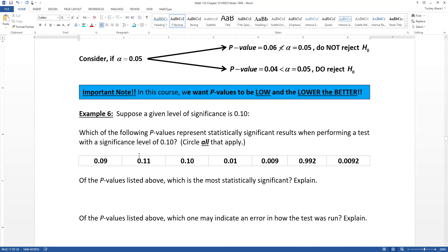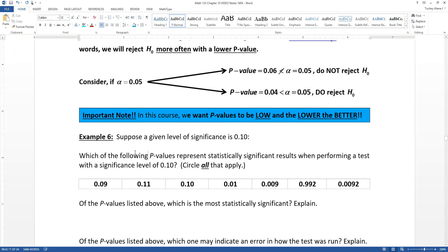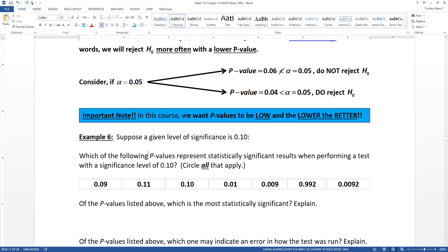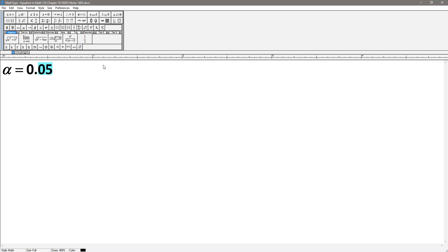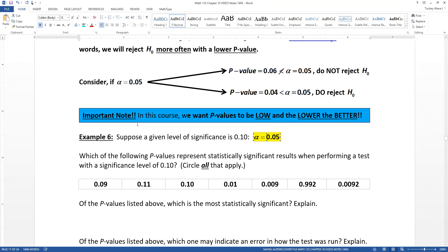All right, so now let's look at this. Which of the following, so your significance level is 0.10, so keep in mind that means alpha is 0.10. So that's what they're giving you. They're giving you an alpha value of 0.10.